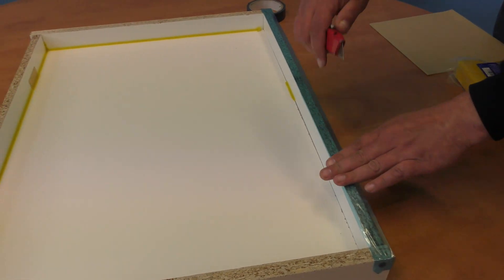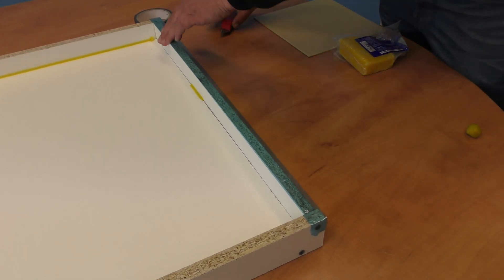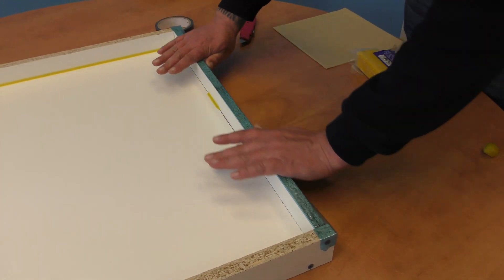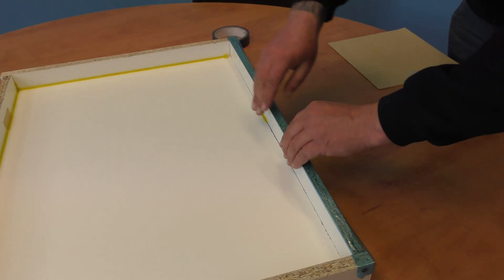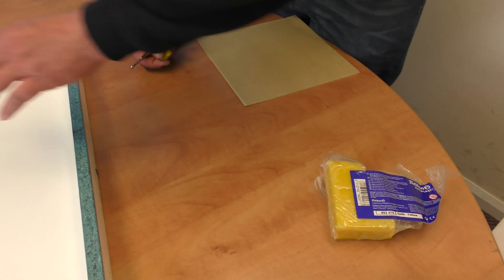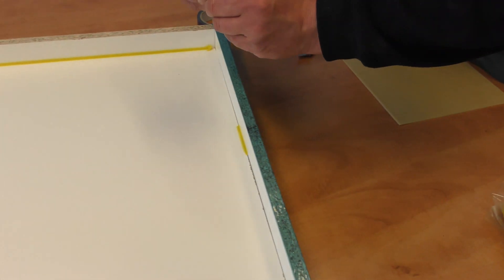Sellotape can be used for this, but it tends to crinkle and lift under the resin as the styrene solvents in the resin attack the glue. You can create a slight radius to the edges which will help with release and provide an aesthetically more pleasing final part.